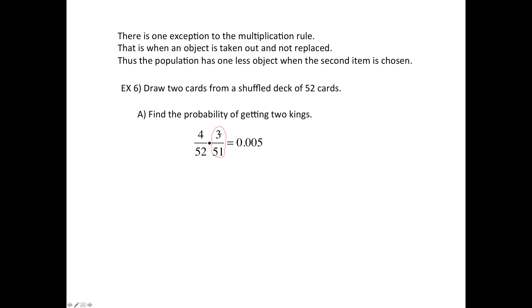So now multiply on the top would be 12, on the bottom divide by 52 and 51. And when you do, it's 0.005, the small chance for getting two kings.